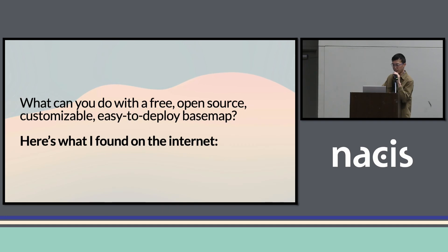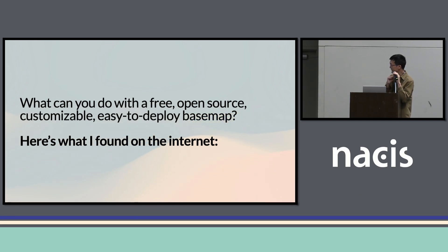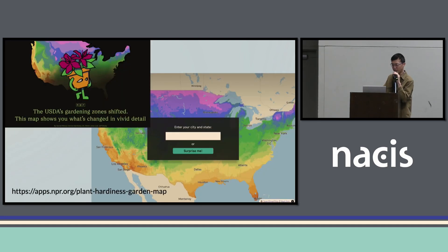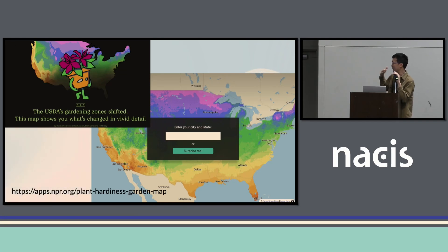So we have this new Protomaps base map — this fresh bun. And if it is free, open source, customizable, and quite easy to deploy, what can you do with it? I just found out yesterday that there is another project at this conference that uses this: the NPR map of USDA's gardening zones. It's an interactive map that uses the base map built in MapLibre — an awesome project.